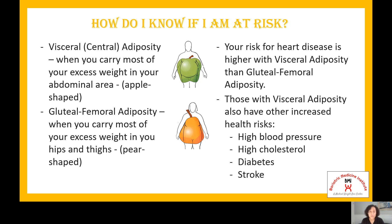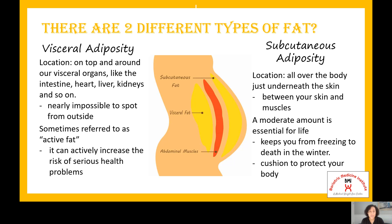Those who have visceral adiposity also have increased risk for high blood pressure, high cholesterol, diabetes, and stroke. Now, there are two different types of fat. You have subcutaneous fat — that's the fat we all know about, the stuff we can pinch more than an inch. This is exterior fat, all over our body just underneath the skin, most recognizable in the hips, thighs, and stomach.